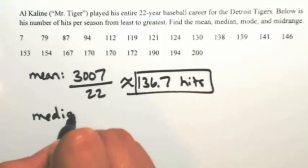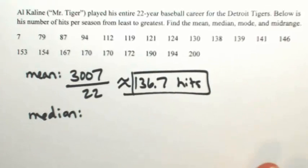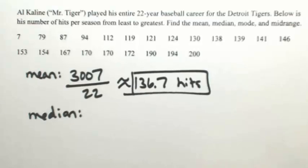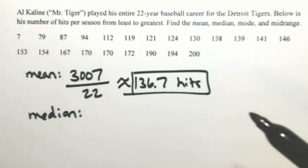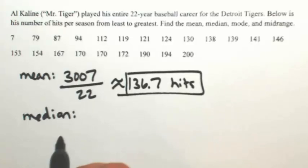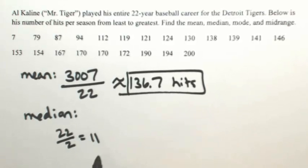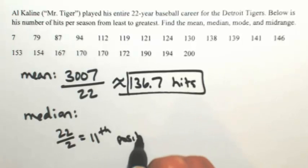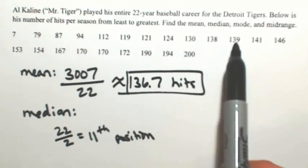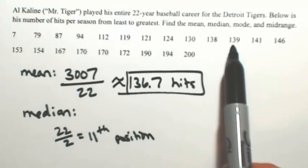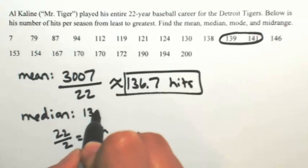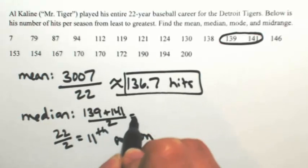Let's see what the median is. To find the median, we're looking for the middle number. Since this is going to be an even number — we have 22 years — we're going to have to do something a little differently. Since we have an even number, 22, if I divide that by 2, we'll be looking for the 11th position. So counting to the 11th number: 1, 2, 3, 4, 5, 6, 7, 8, 9, 10, 11. Because this is an even number, we need to take the average of the 11th and 12th numbers. So the median is 139 plus 141 divided by 2, giving us 140.